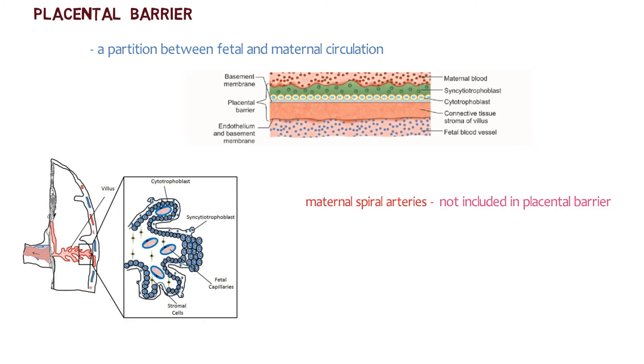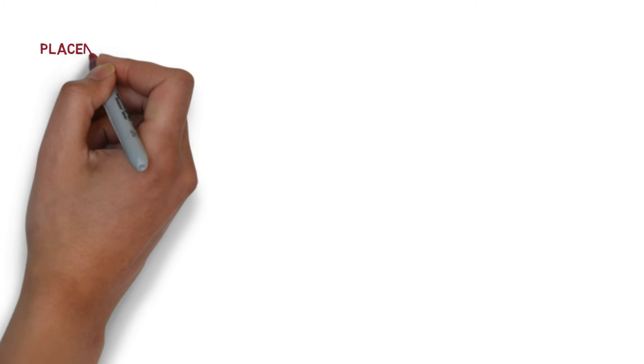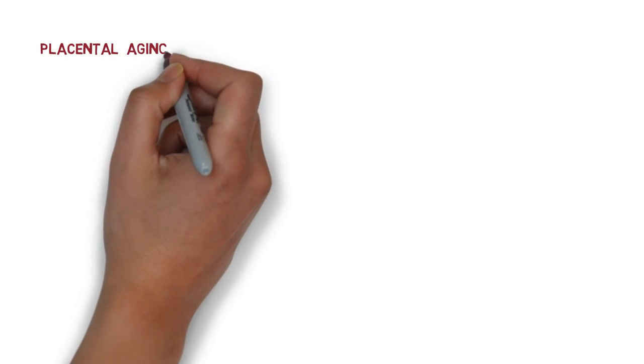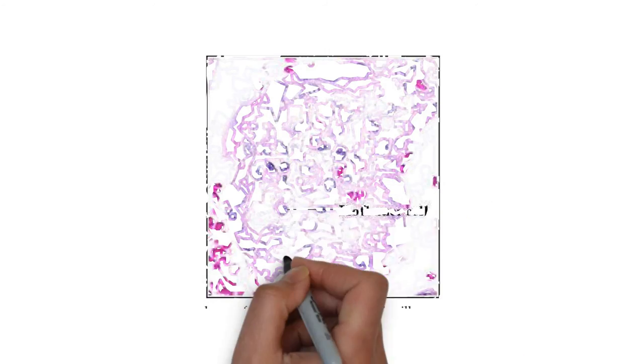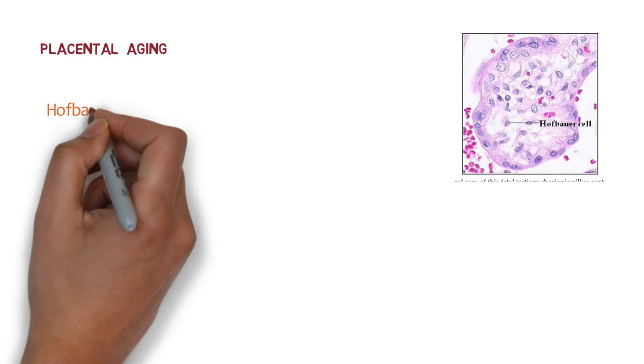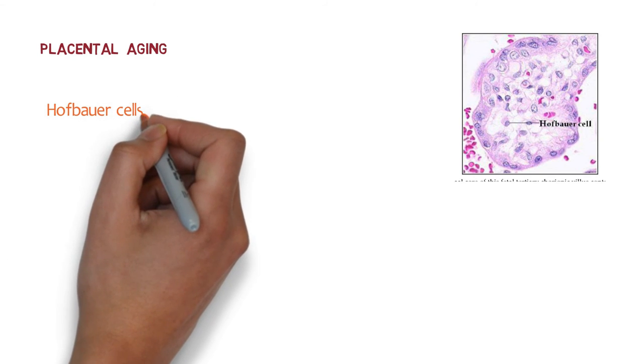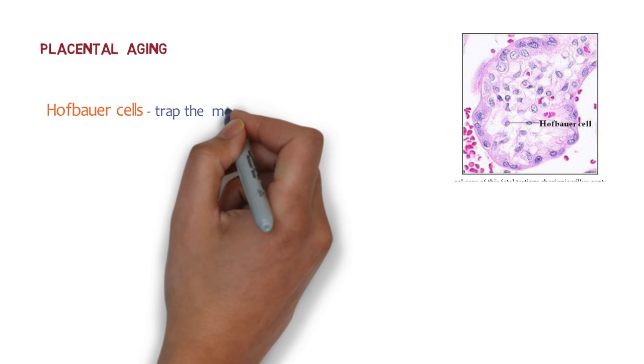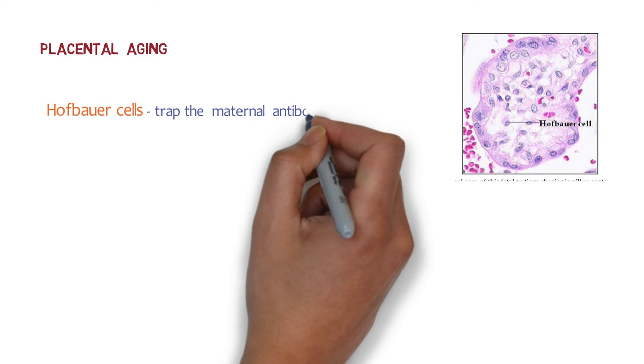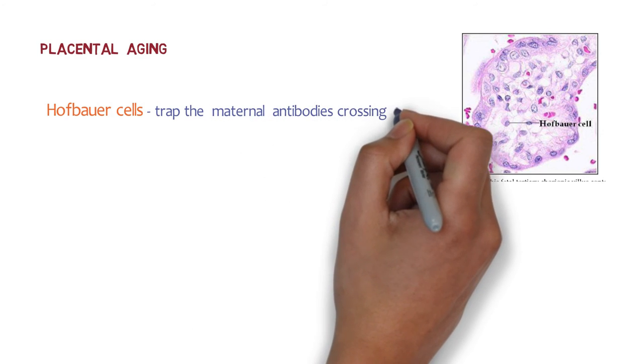This trophoblastic invasion prevents PIH — pregnancy-induced hypertension. The placenta has a limited lifespan and undergoes degenerative changes as a mark of senescence in the villi and decidua. The villous stroma contains fetal macrophages known as Hofbauer cells, which play a role in immunosuppression and trap maternal antibodies crossing the placenta.